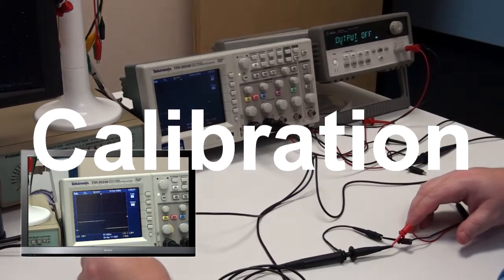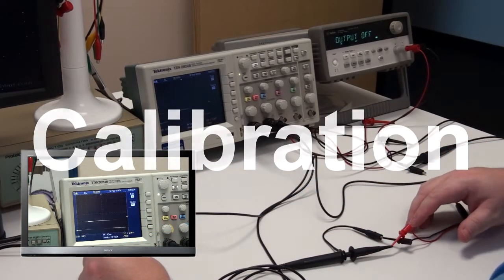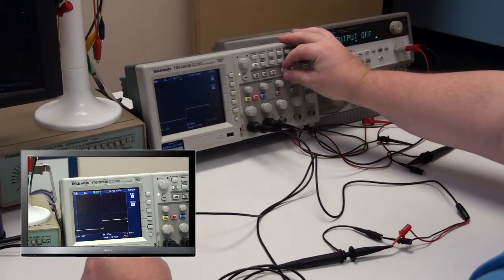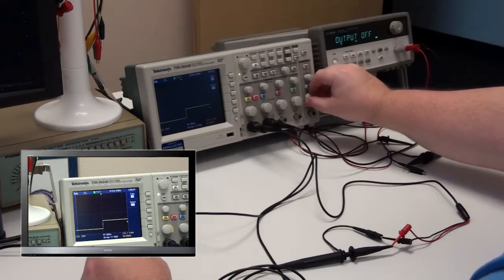Calibration. My Tektronix scope helps me keep my old signal generator output accurate for bias and level. This keeps me from damaging circuits that I connect the signal generator to.